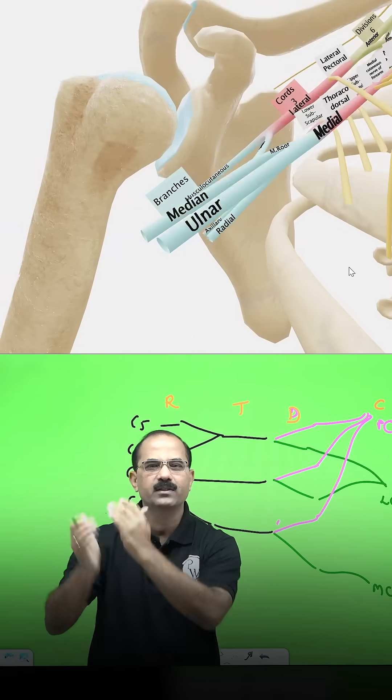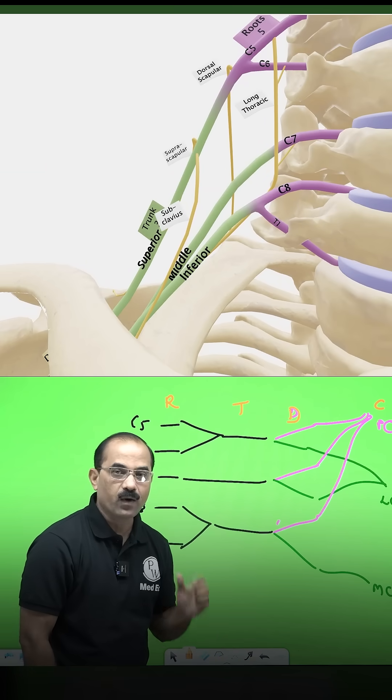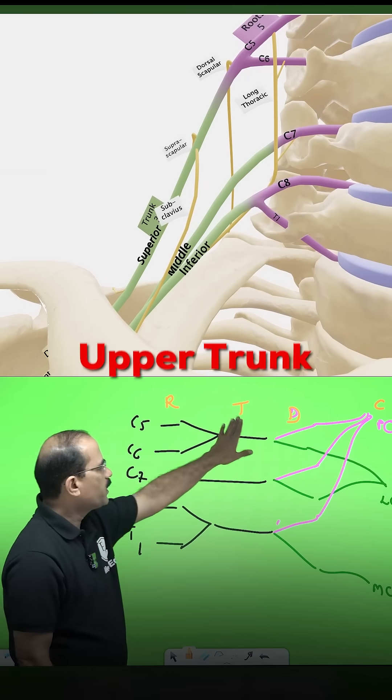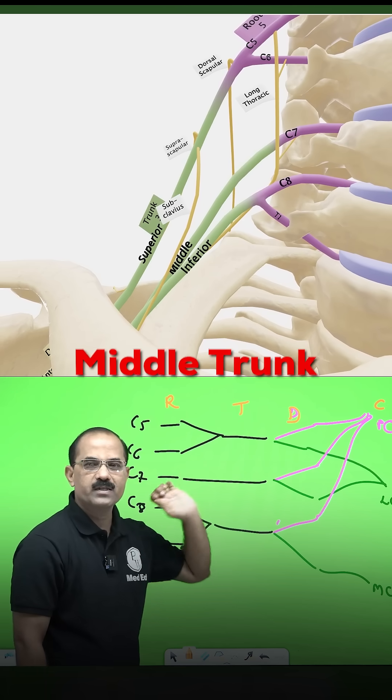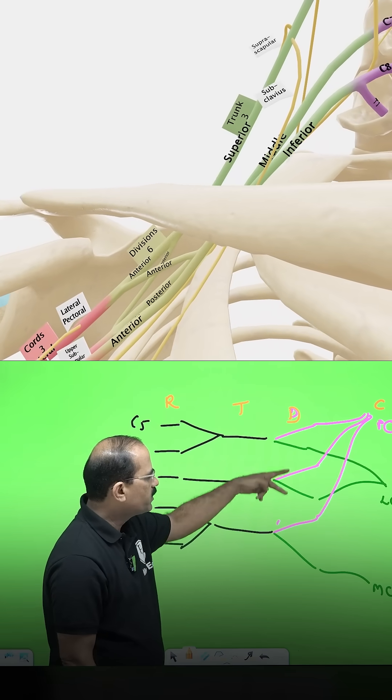Roots are the ventral ramei of C5 to T1. C5, C6 form the upper trunk. C7 continues as middle trunk. C8, T1 form the lower trunk. The trunks divide into divisions.